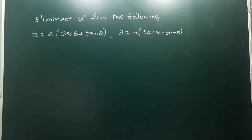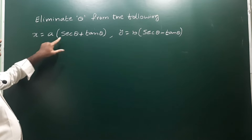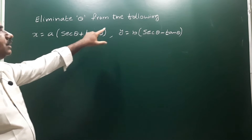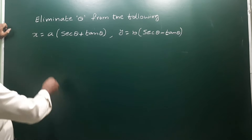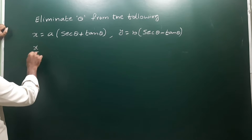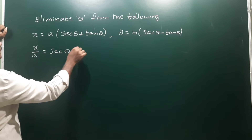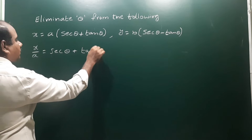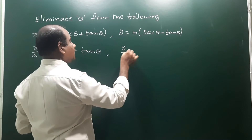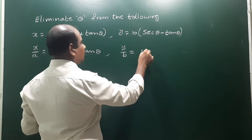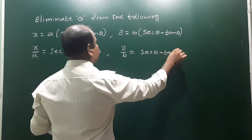Eliminate theta from the following: x is equal to a into secant theta plus tan theta, y is equal to b into secant theta minus tan theta. So here, x by a is equal to secant theta plus tan theta, and y by b is equal to secant theta minus tan theta.